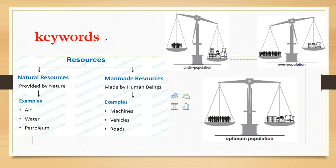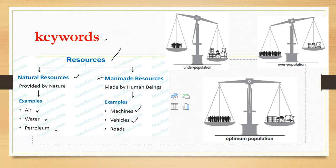There are keywords here. Resources come in different types: natural resources, which are things like air, water, rivers, vegetation, and land; and man-made resources like machines, vehicles, and roads. We have under population, over population, and optimum population — this is the relationship between population and resources.